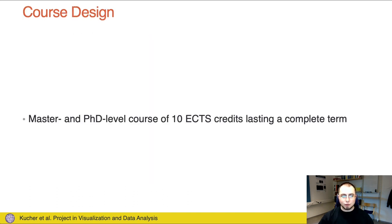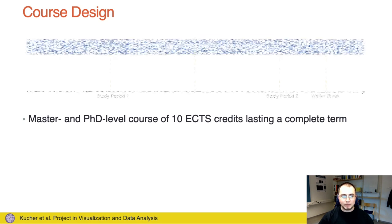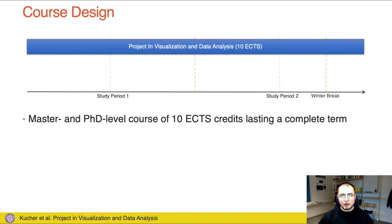This project course was designed as mainly a master level course of 10 ECTS credits that would last a complete term. We also allowed PhD students with sufficient knowledge to take part as well. We primarily aimed for the autumn semester, meaning that the winter break would also take place, and this course was designed to run alongside other courses at our department, which typically only last for one study period or quarter.